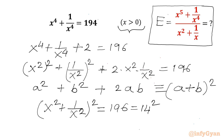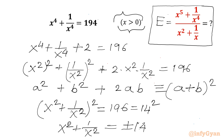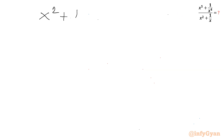Now I will take the square root of both sides: x square plus 1 over x square equals plus or minus 14. Since x is greater than 0, and the sum of two squares cannot be negative, we reject the minus sign. So the accepted value is plus 14, giving us x square plus 1 over x square equal to 14.